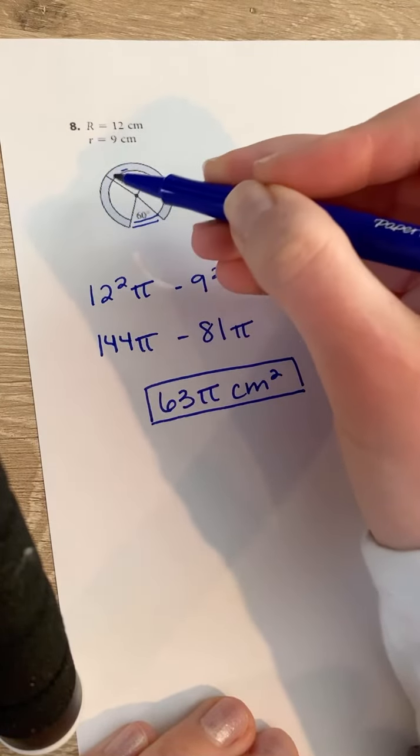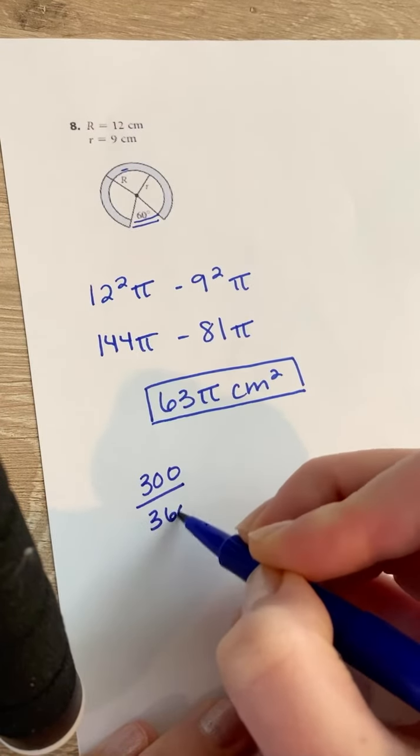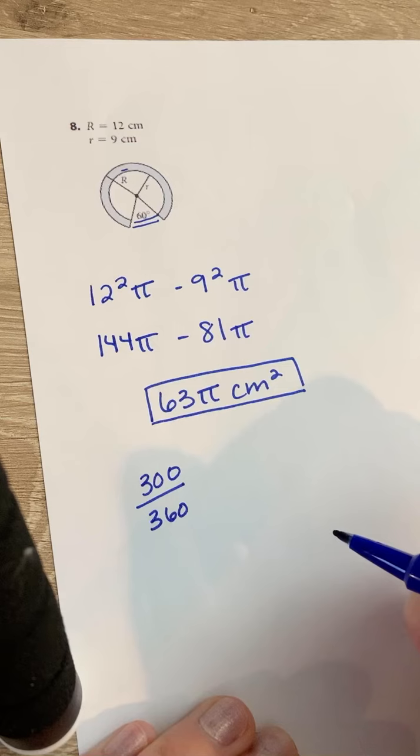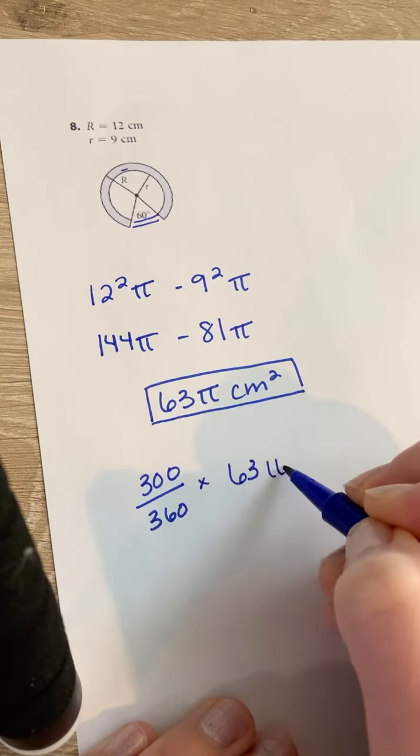If we're dealing with a circle, that means 300 degrees out of the 360 degrees is what they want you to find. Then you multiply that by 63 pi.